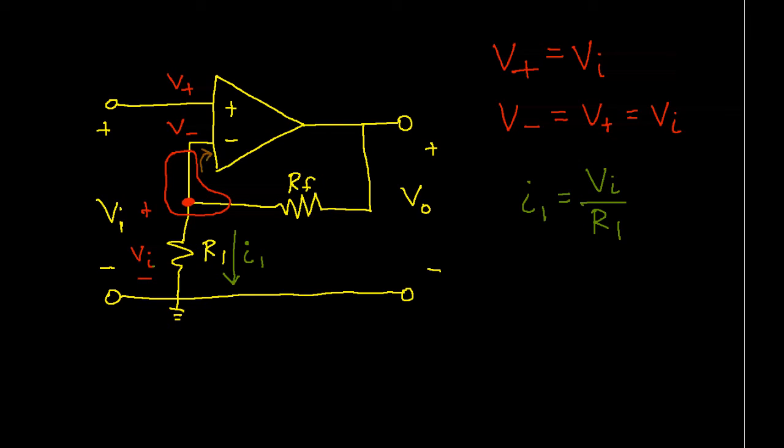The current going into the inverting input is zero. That's part of the assumption of the ideal op-amp model. So that means that all of the current that goes through I1 has to come down out of the output of the op-amp and through RF. The current through RF is the same as the current through R1.